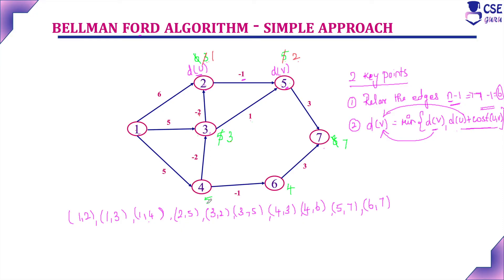For 3 to 5: 3 plus 1 equals 4, but already vertex 5 distance is 2, so keep 2. For 4 to 3: 5 minus 2 equals 3. For 4 to 6: 5 minus 1 equals 4. For 5 to 7: 2 plus 3 equals 5, but already distance is 7, so minimum is 5, update to 5. For 6 to 7: 4 plus 3 equals 7, but already 5 is minimum. Second relaxation completed.